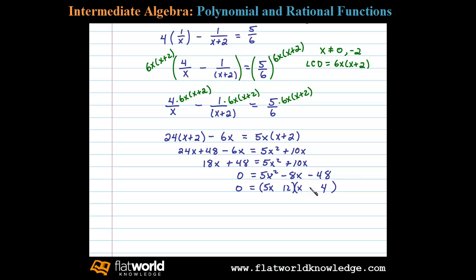Which adds up to negative 8x if the 20 is negative and the 12 is positive. Positive 12 times negative 4 is negative 48, and it's factored correctly. And so we then set each factor equal to 0.